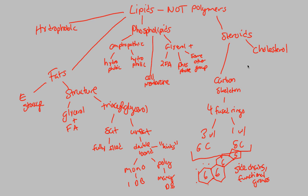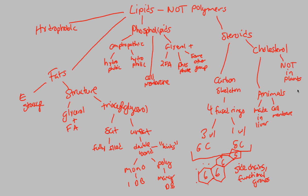Cholesterol is one of the most famous steroids. Interestingly, they're not found in plants — plants do not have cholesterol. Animals rely heavily on cholesterol. Cholesterol gets a bad reputation, but it is very important in the human body and animal body. It's actually made and synthesized in the liver, so it's not just about eating cholesterol — it's synthesized within our own bodies. It is hugely important in the cell membrane and promotes a liquid cell membrane.